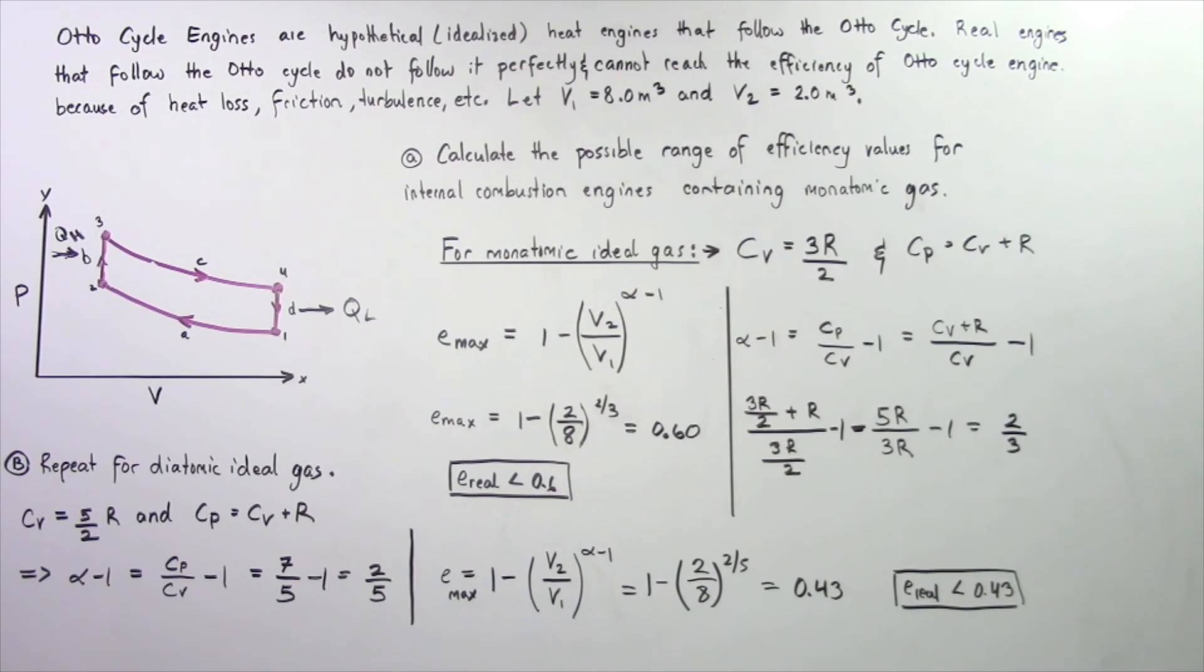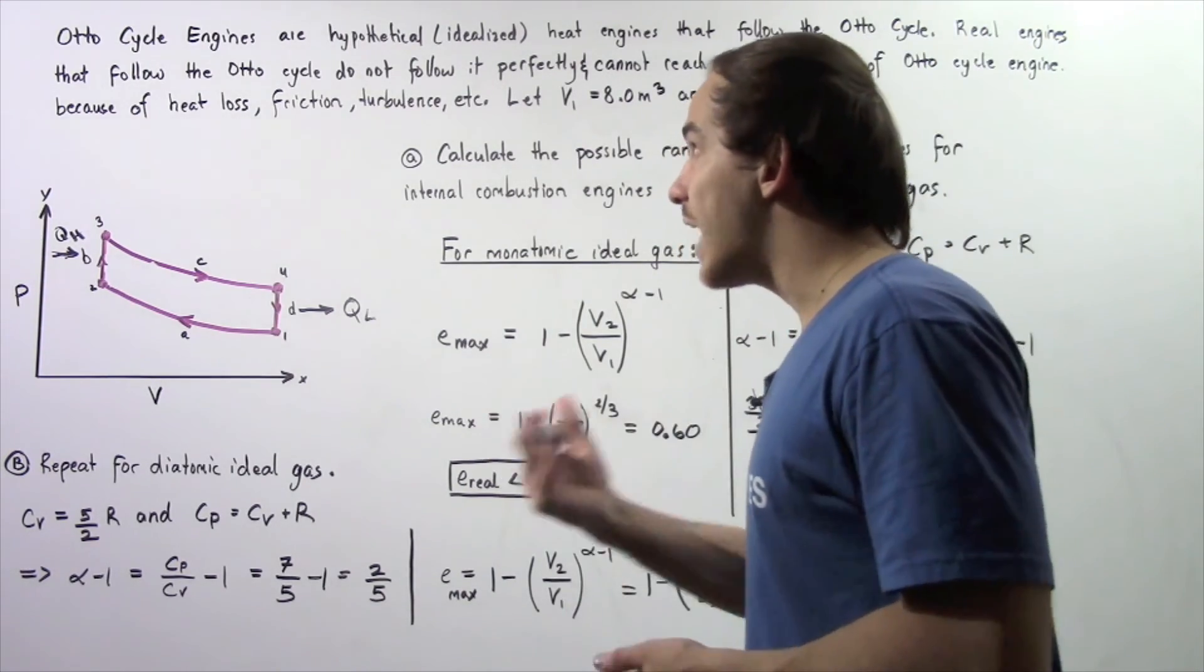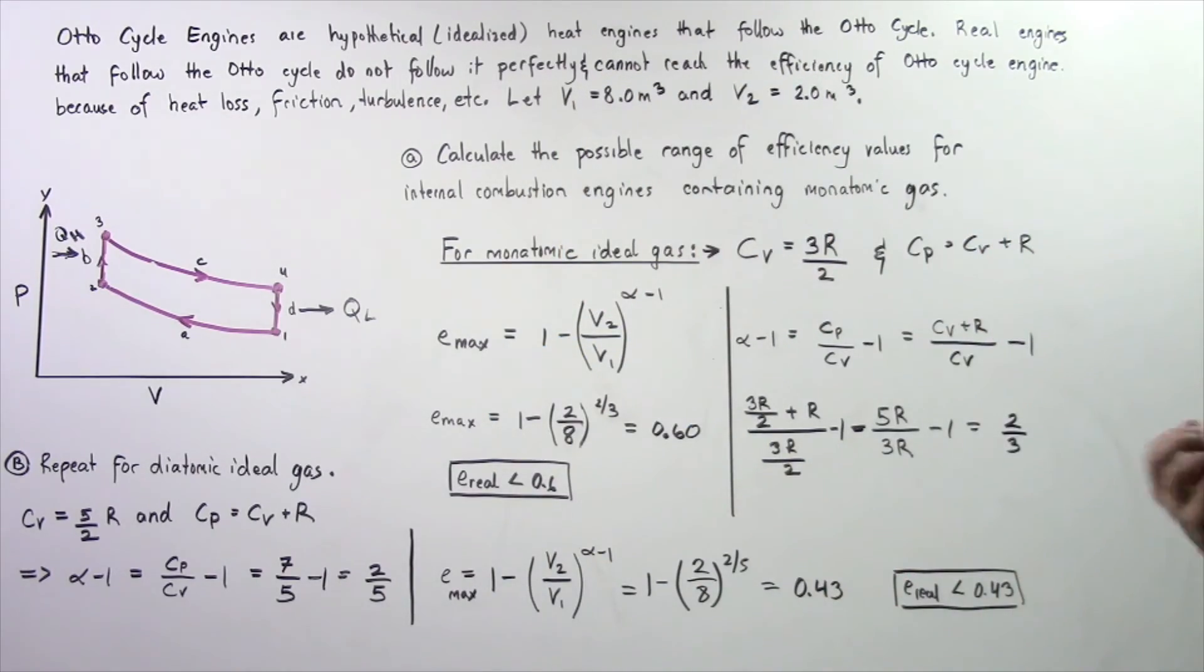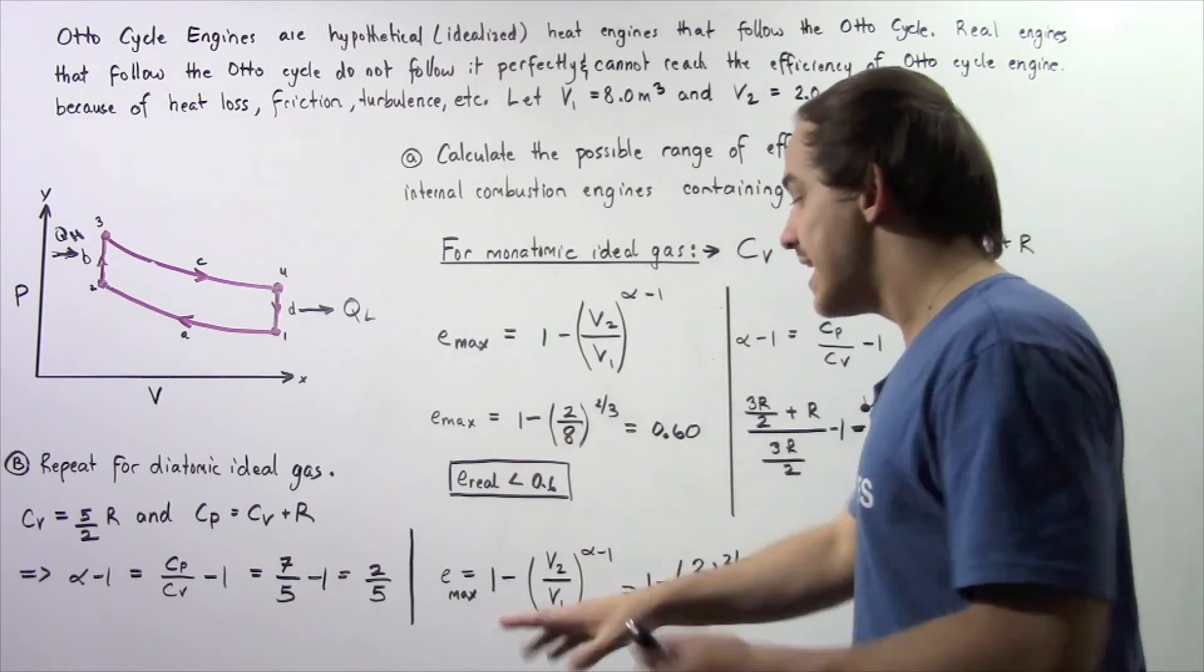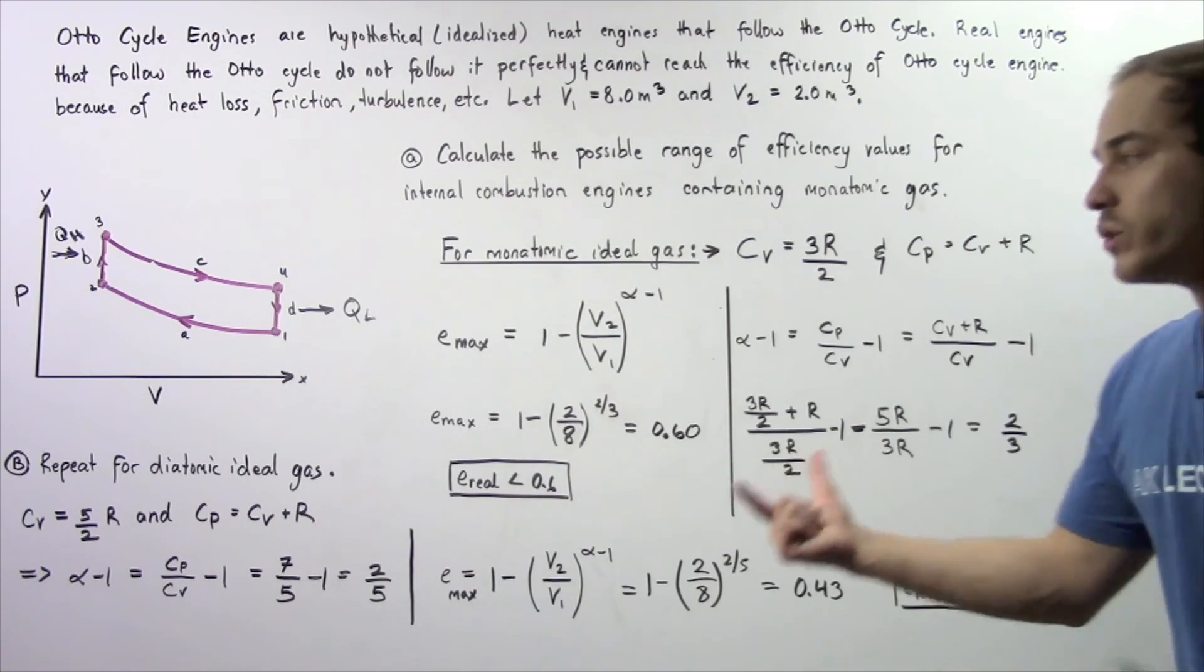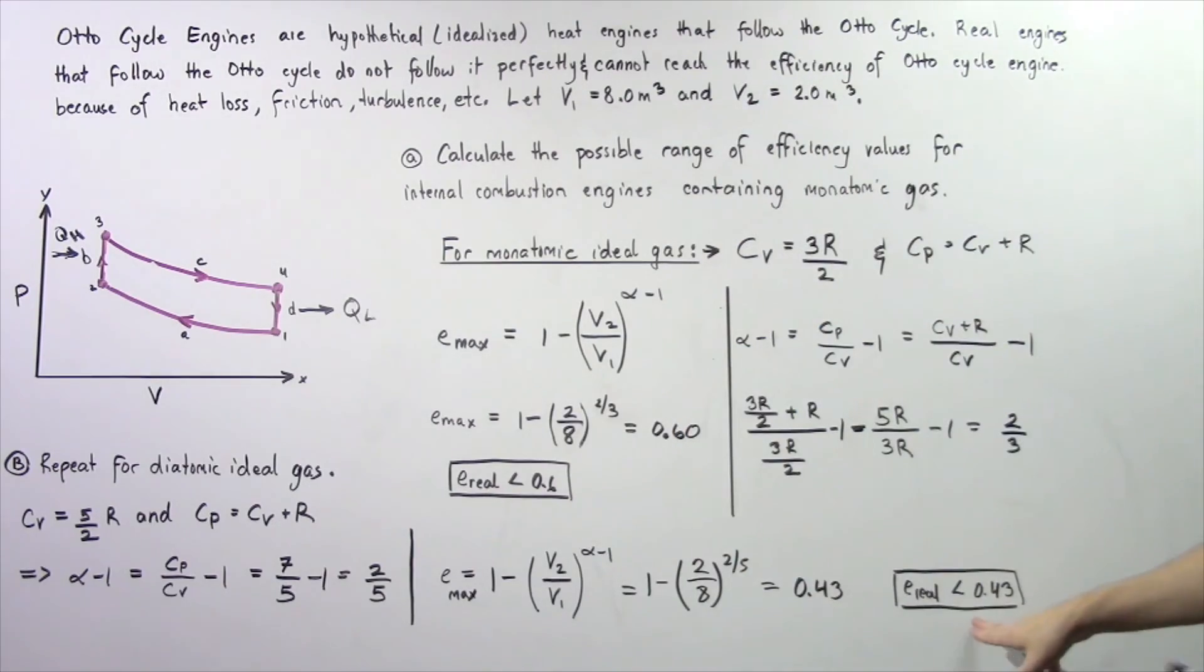So that means for a perfect Otto cycle engine the efficiency is given by this quantity but because our real engine has to have a quantity less than Emax that means the efficiency of a real engine that contains a diatomic real gas has to be less than this quantity.